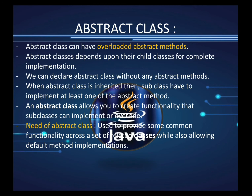Why do we need abstract class? It is used to provide common functionality across a set of related classes while allowing default method implementation. Think of it like a teacher giving questions to students — many students inherit that question and create their own programs. The abstract method provides a prototype, and students apply their own logic within the given structure.